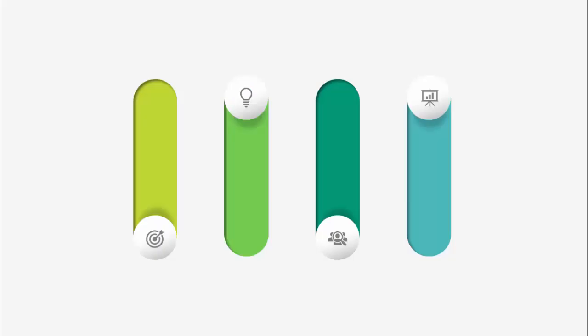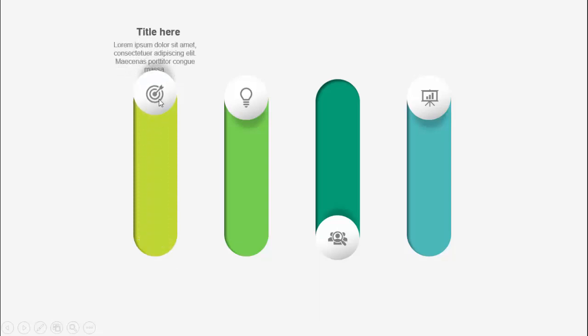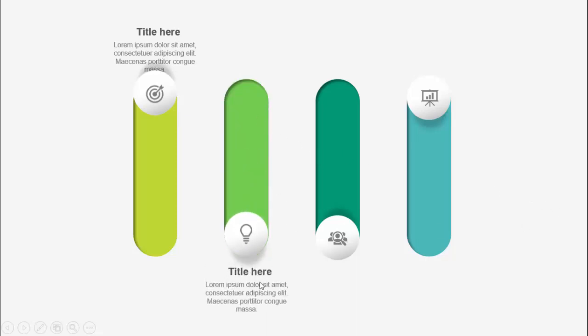In today's tutorial I'm going to show you how to create this four sliding options infographic slide in PowerPoint. As you can see, I have put four options with different colors and I have added one oval shape along with the icon. When I click, the option goes up and then you can see the title and detailed text.